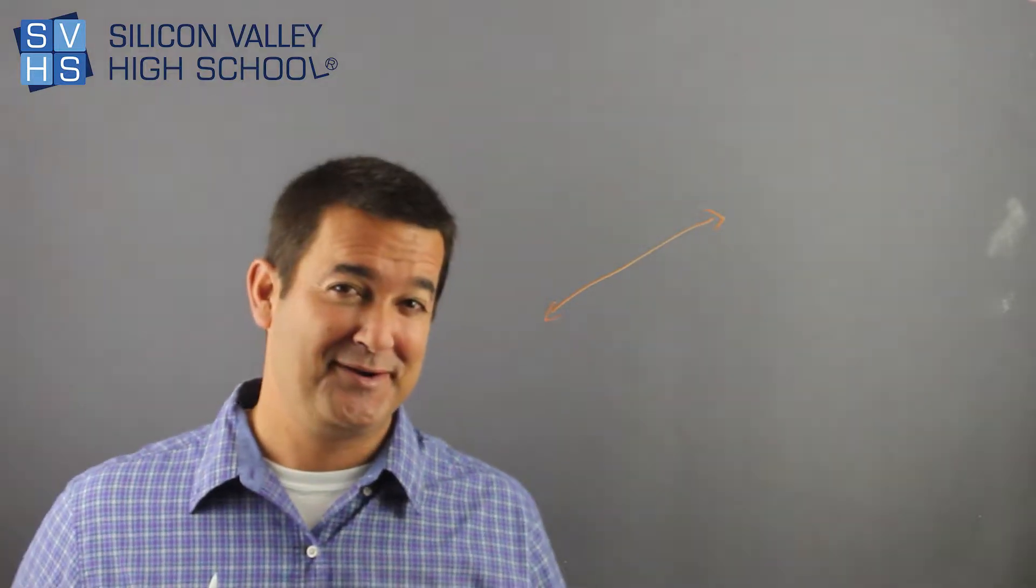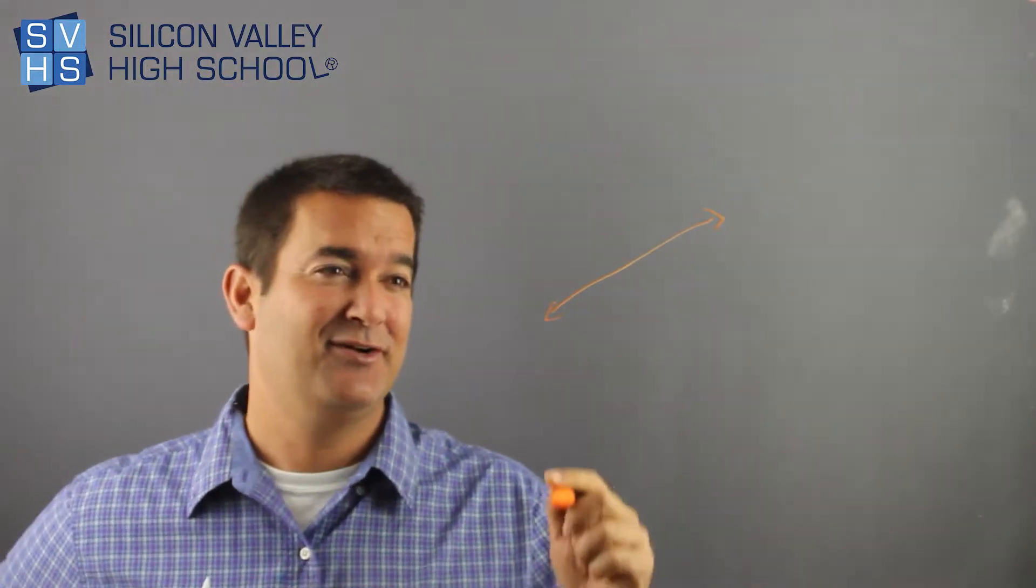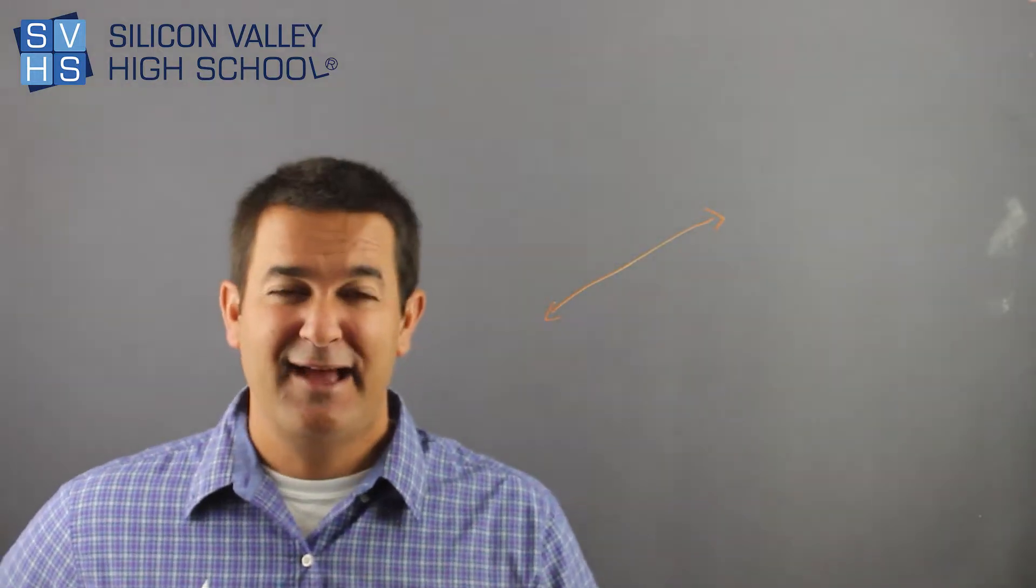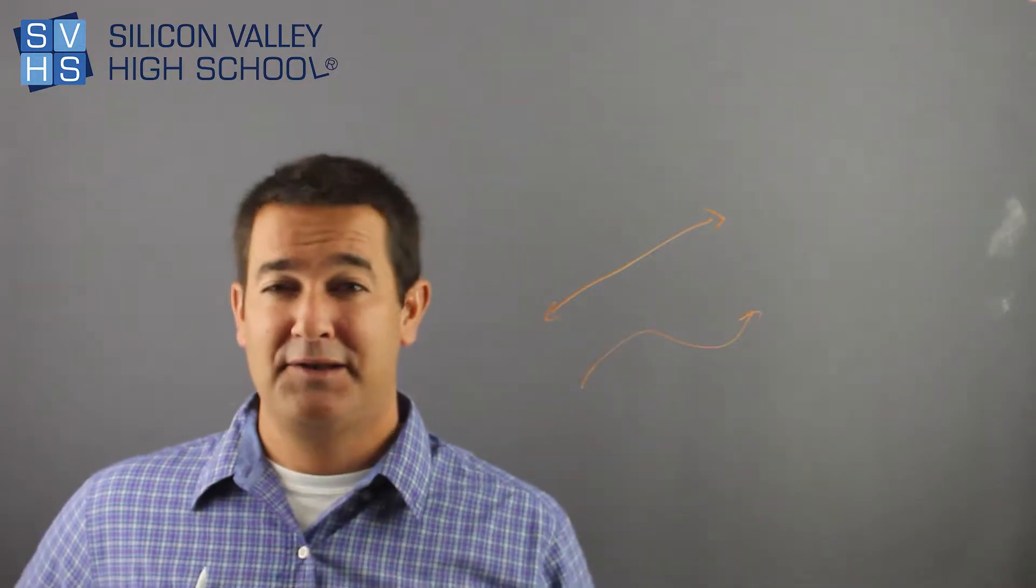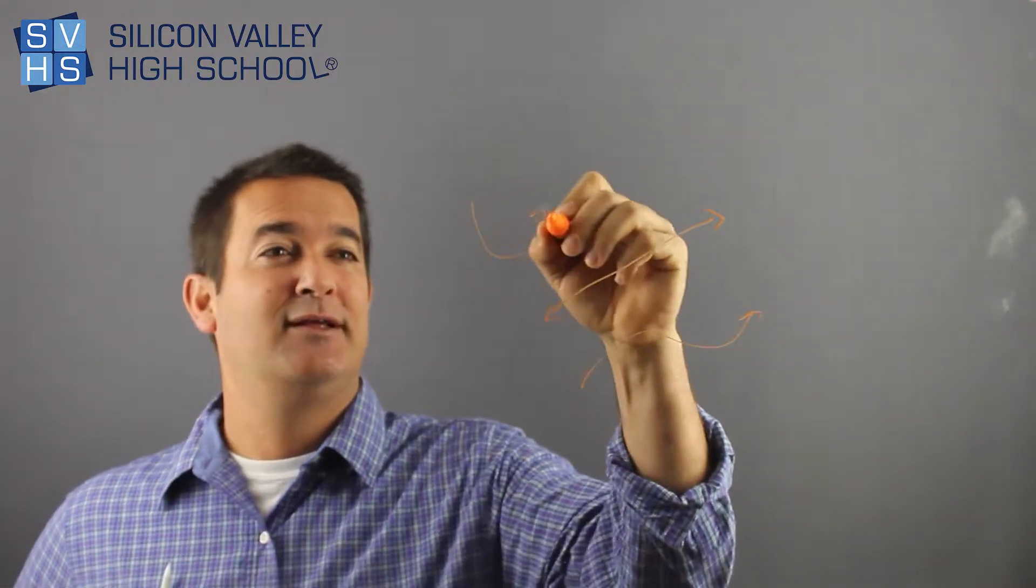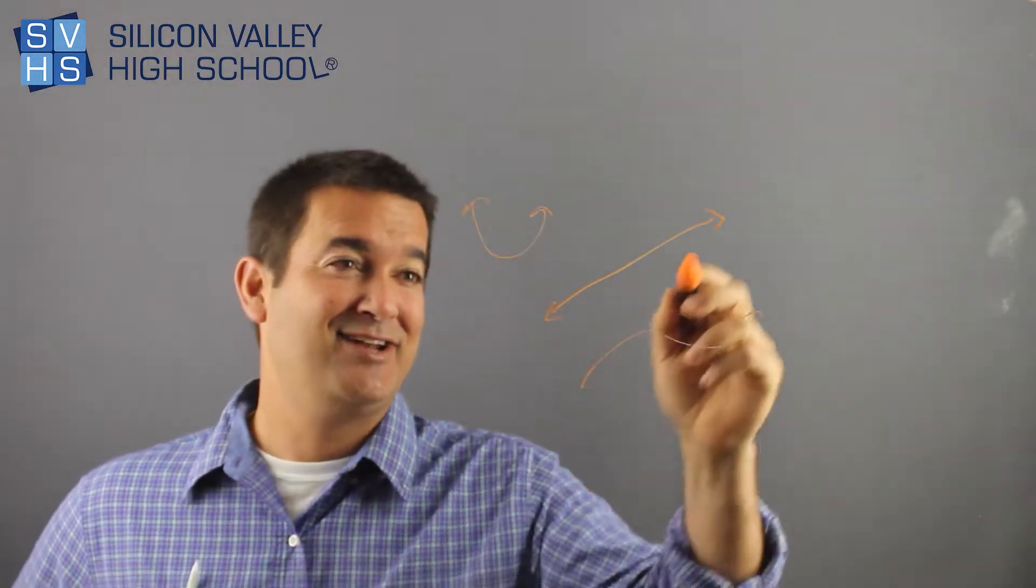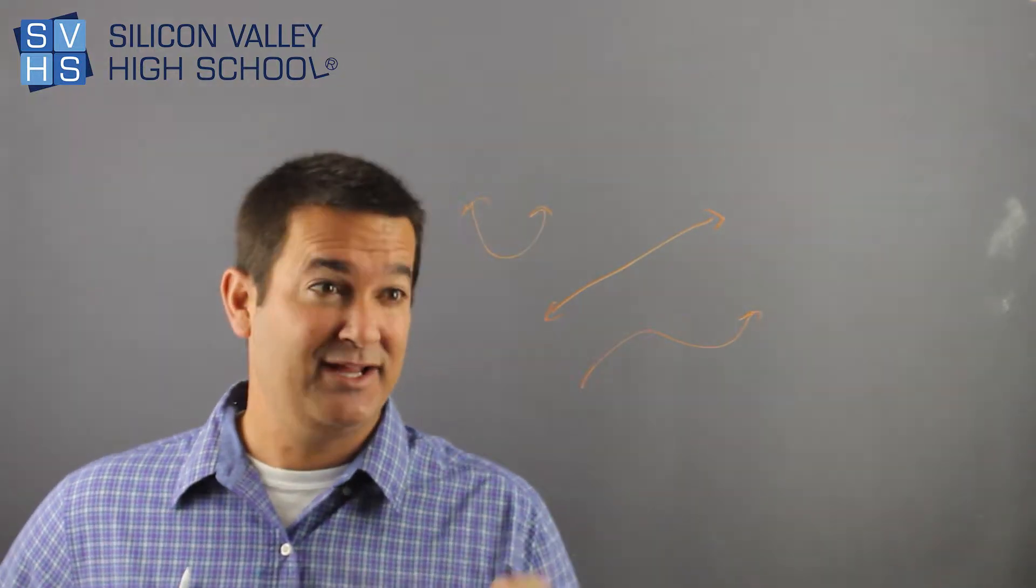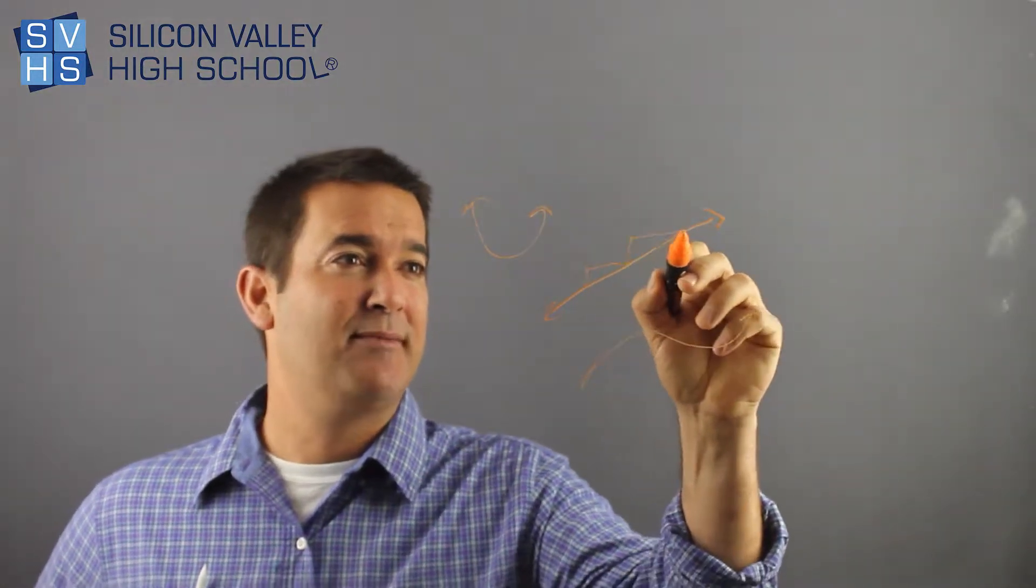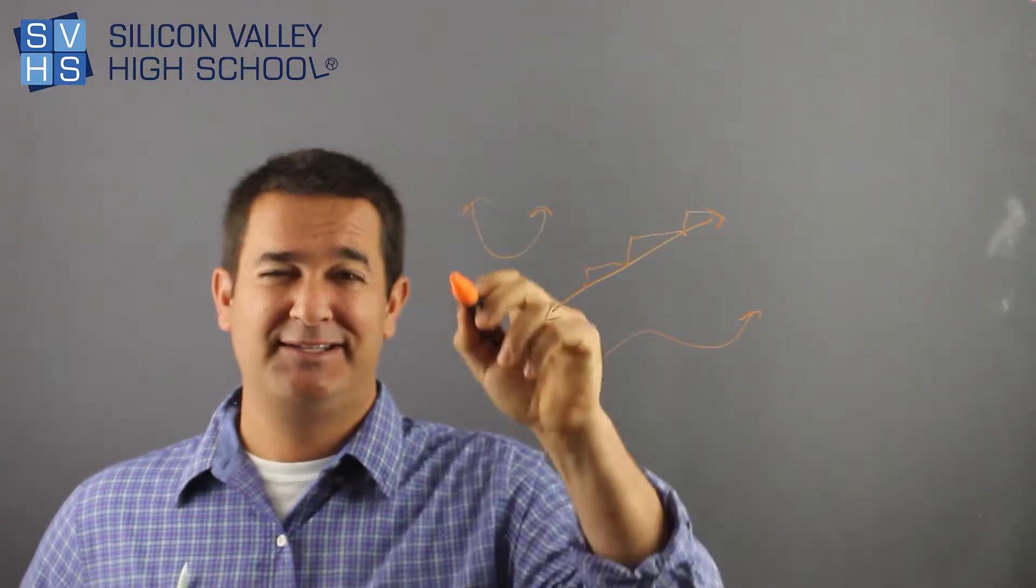But of course, math has to get all weird and technical and make it a little more challenging. So if I looked at this and said, hey, is that a linear function? You'd say yes. This one, not so much. This one, not a linear function. It has to have an exact constant slope or rate of change. It goes up over the same amount every time. This is all crazy.